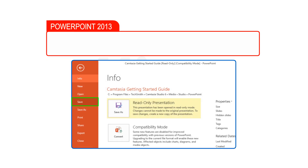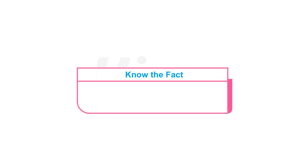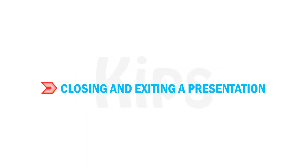In PowerPoint 2013, select the Save option on the File tab to save the presentation. Also use the Save As command if you want to save an already existing document again with a new name without deleting the original file.